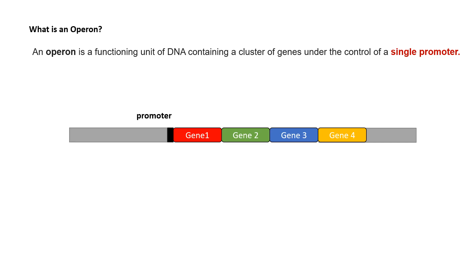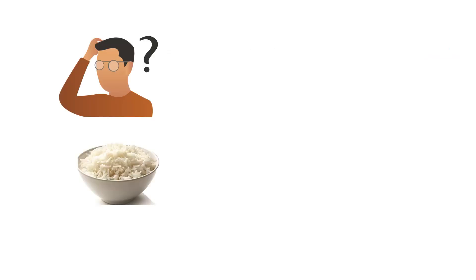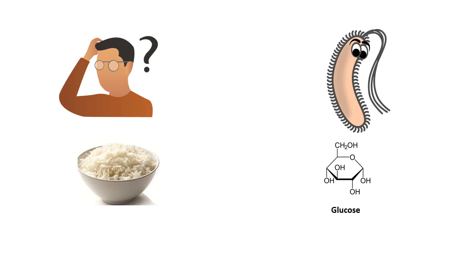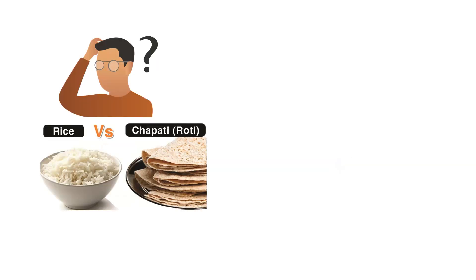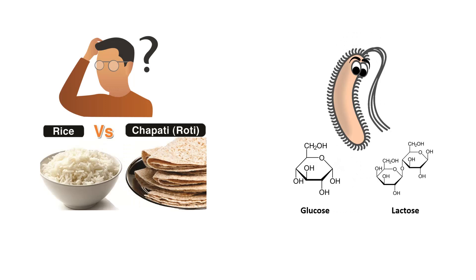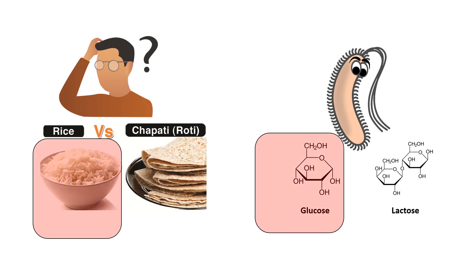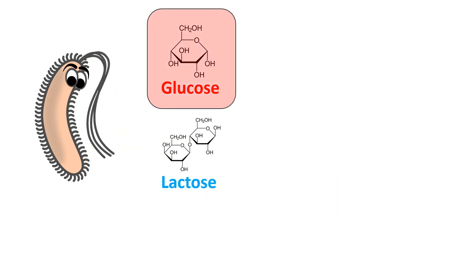The lactose operon is used to produce the genes required for lactose metabolism in E. coli, and all these genes are under the control of a single promoter. To understand what the lac operon does, consider an analogy: just as you prefer rice, E. coli's preferred nutrient source is glucose. If a bacterium has a choice between glucose and lactose, it would definitely choose glucose.